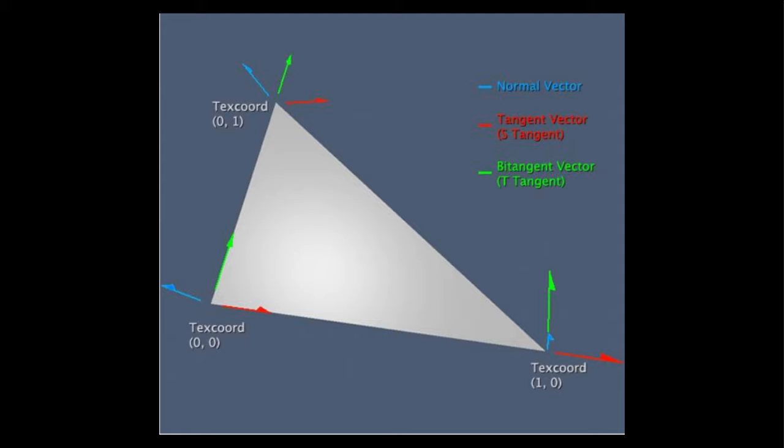Well, the normal, most obviously, can just be perpendicular to the surface of the triangle. But then the tangent and bitangent, less obviously, we generally want to have them run in the same direction as the u and v axes. So in this simple case, our UV coords are 0, 0, 1 and 1, 0, and the tangent vector is running along the u axis, and the bitangent is running along the v axis. Note this means that the normal, tangent, and bitangent are the same for all three vertices, and in fact for all points on the surface of the triangle.